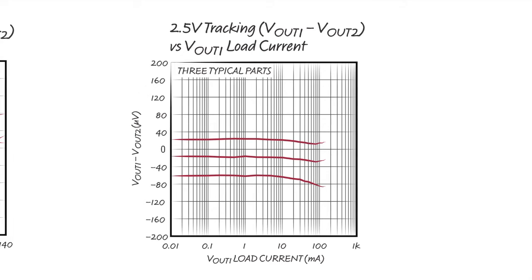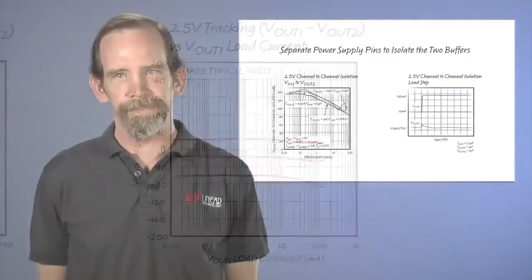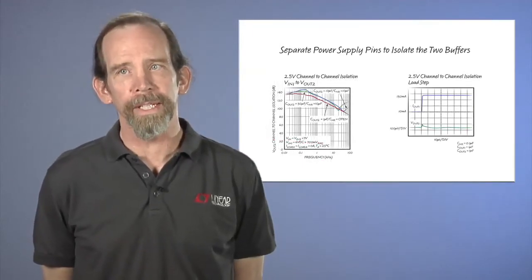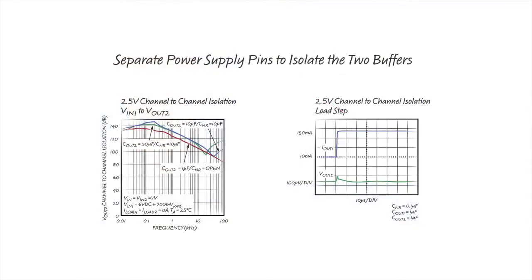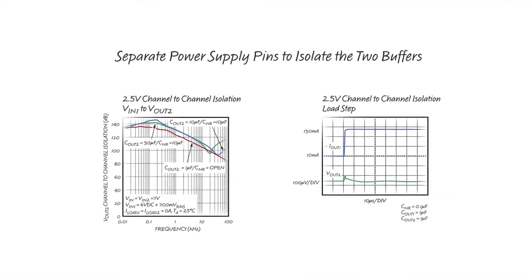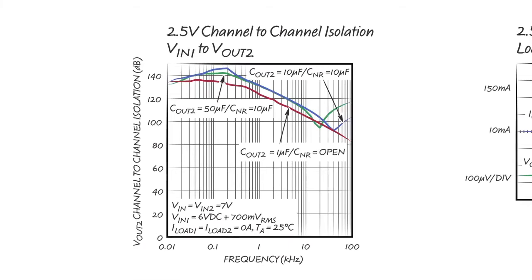This plot shows how output 1 is isolated from output 2 over frequency for different combinations of NR and output capacitors. At 100 Hz, we see about 140 dB isolation. This is equivalent to a 1 microvolt change on output 1 when there is a 10 volt change on the supply input of output 2.